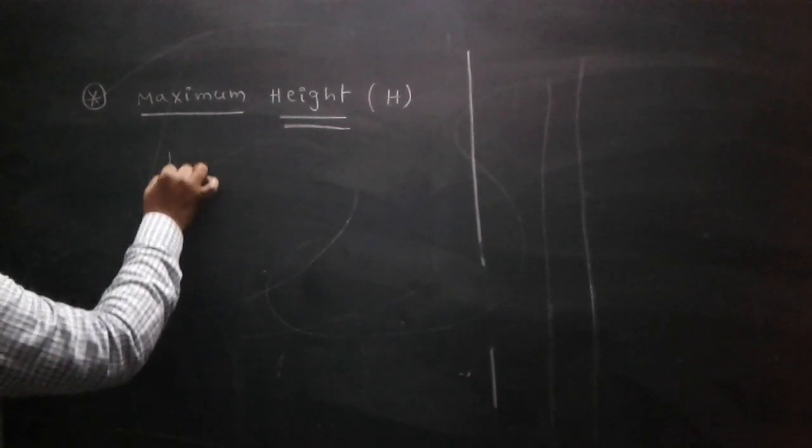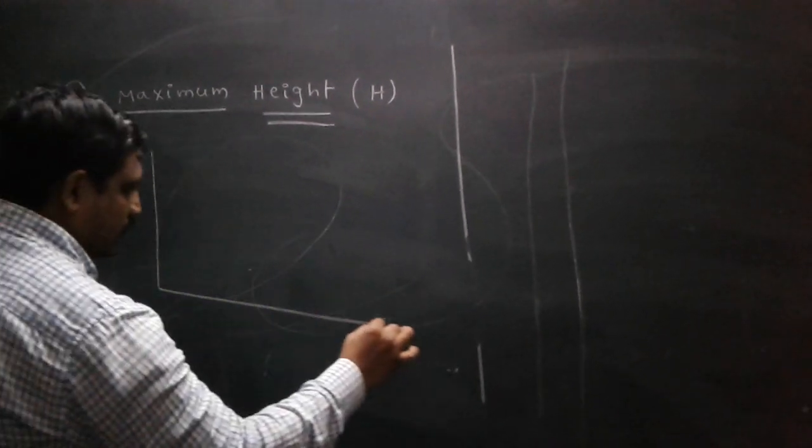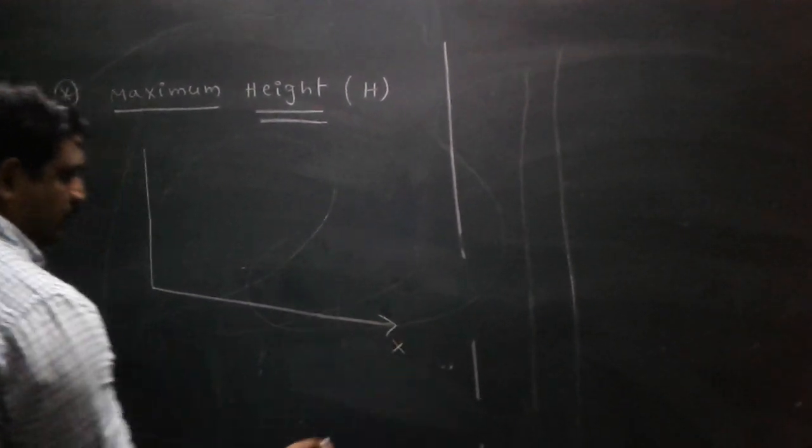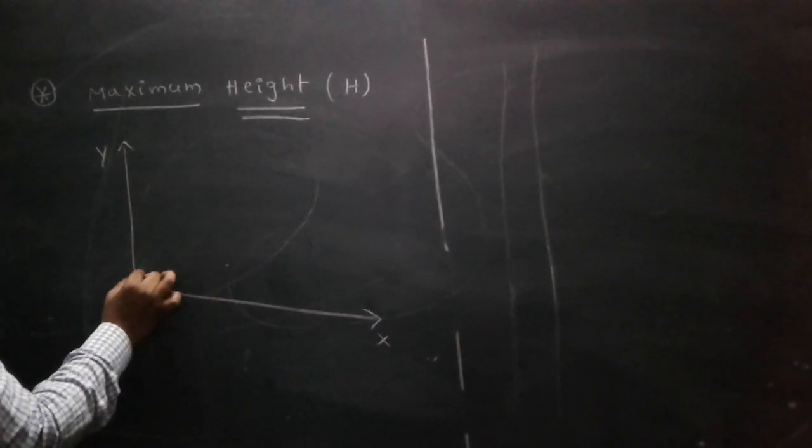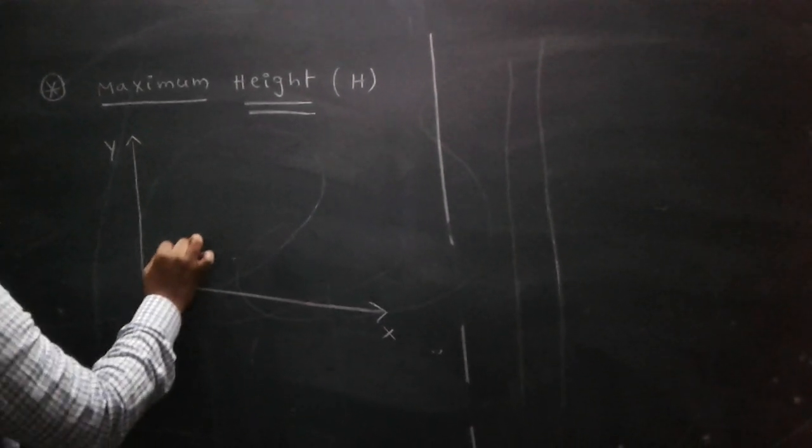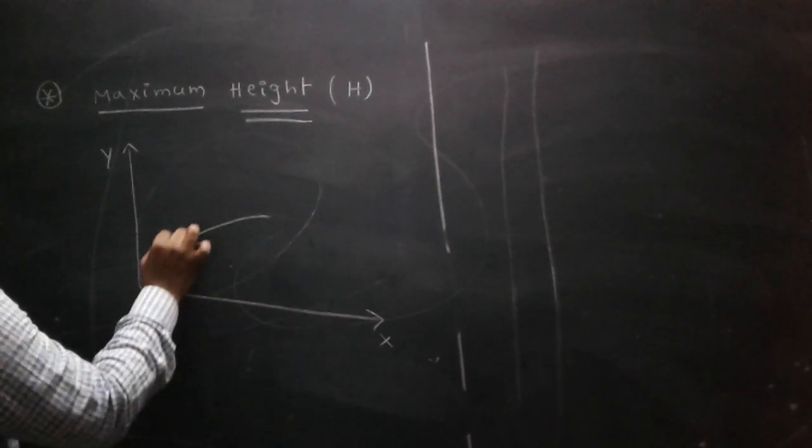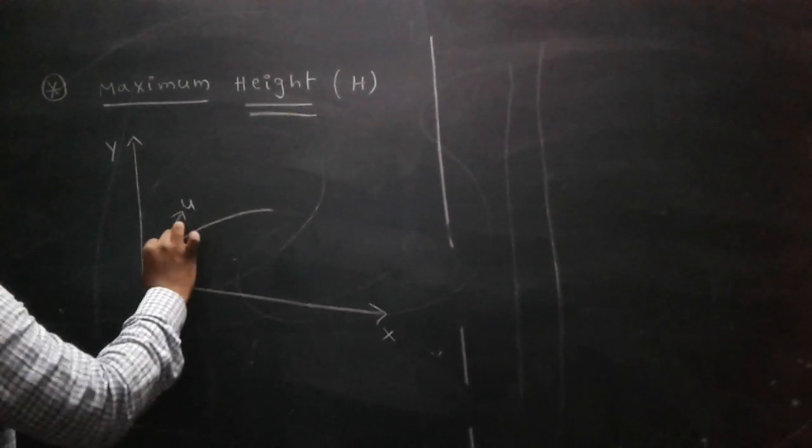Look here. The projectile is 2D with x-axis and y-axis. Here the body is thrown with a certain velocity at a certain angle.